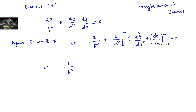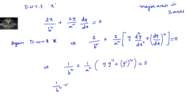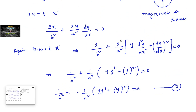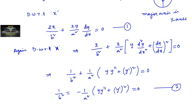So we have 1/b² + (1/a²)[y·y″ + (y′)²] = 0, which gives 1/b² = −(1/a²)[y·y″ + (y′)²]. Let's call this equation 1.